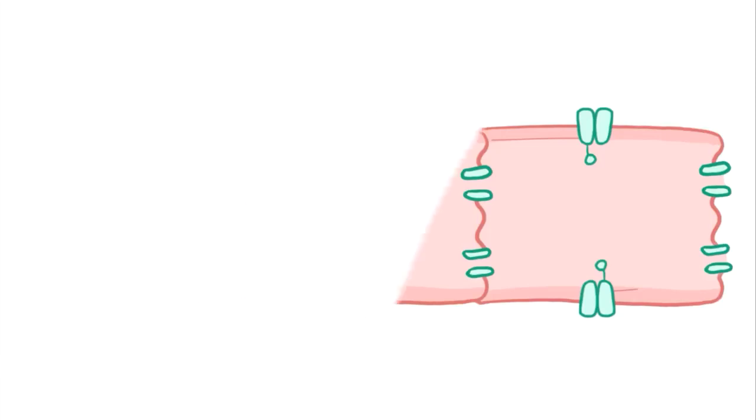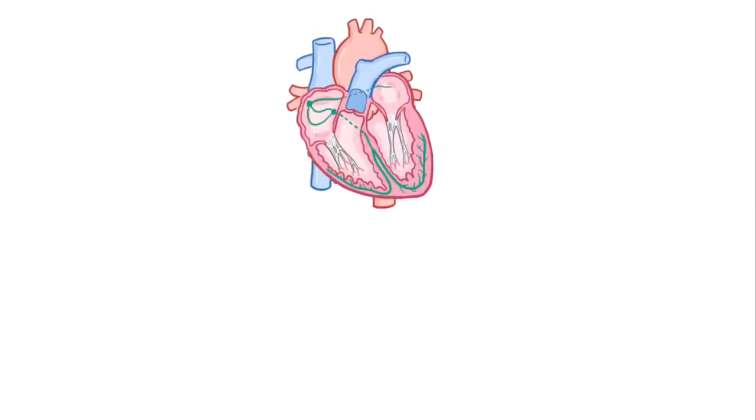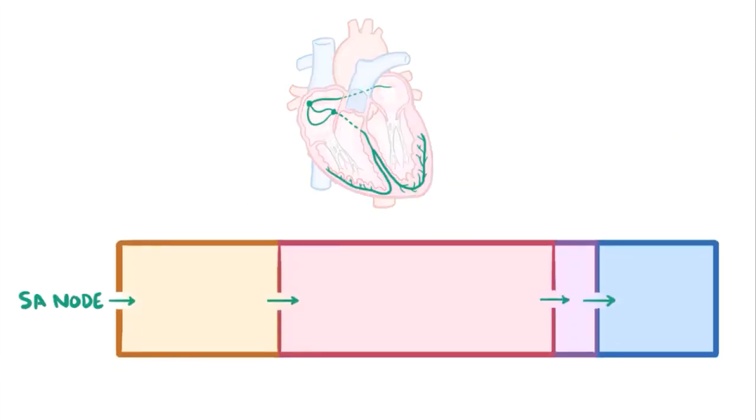Alright, so let's break down the conduction velocities in the different parts of the heart. Starting at the SA node, the depolarization wave moves through the myocytes in the atria at about 1 meter per second, then goes through the AV node super slowly, at about 0.01 to 0.05 meters per second.